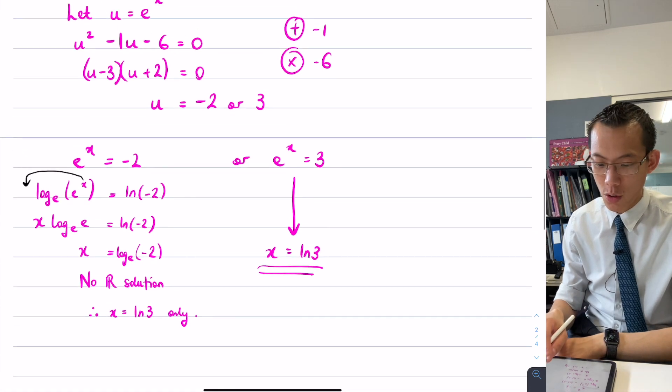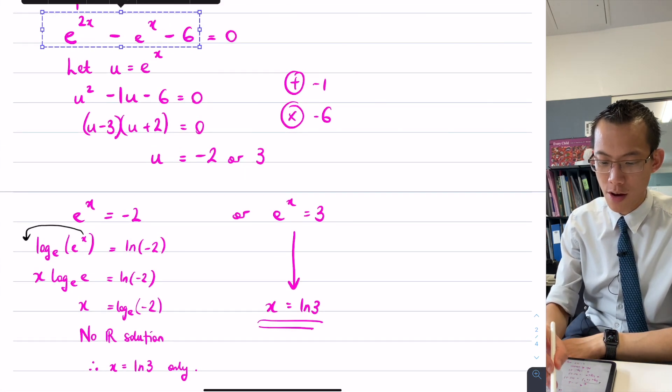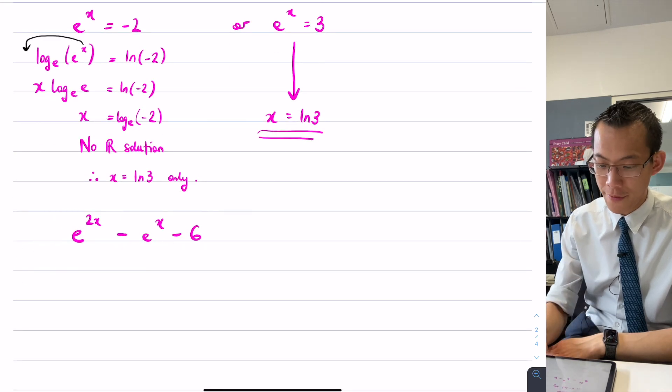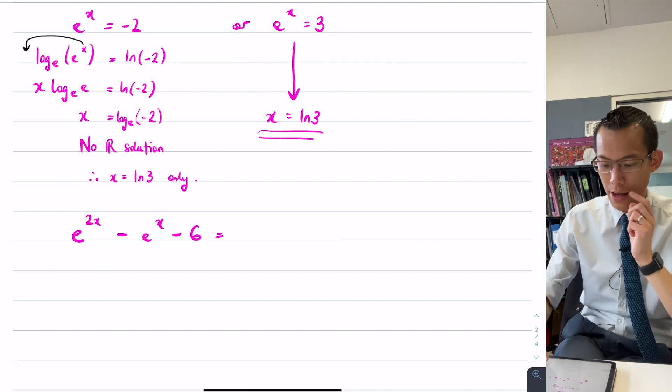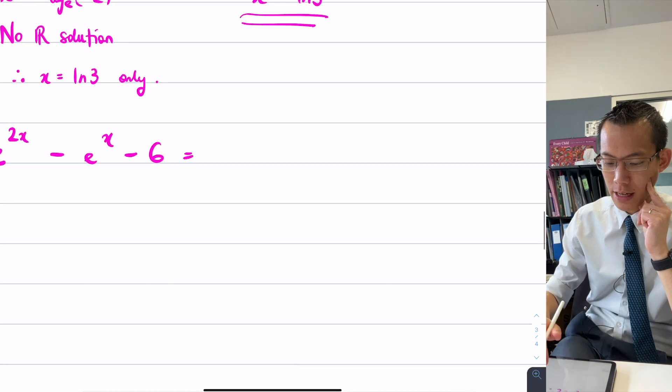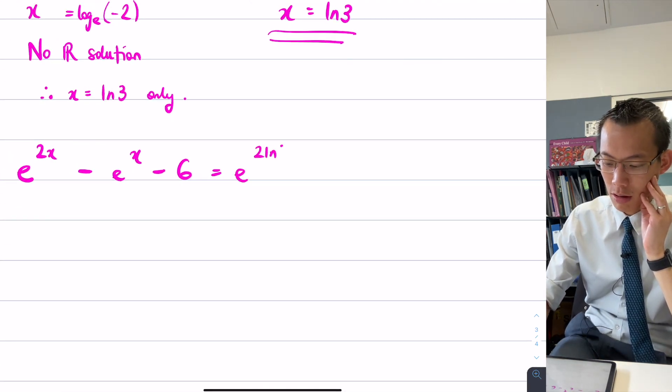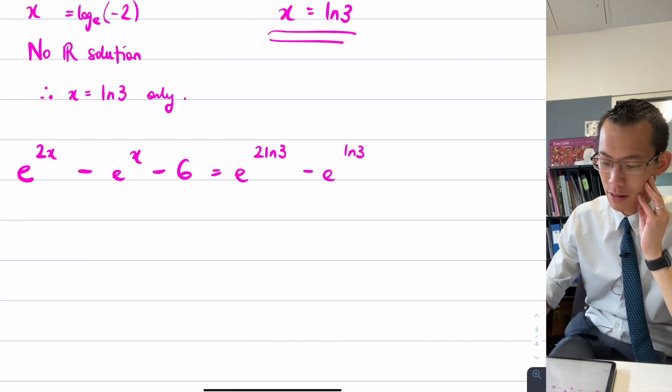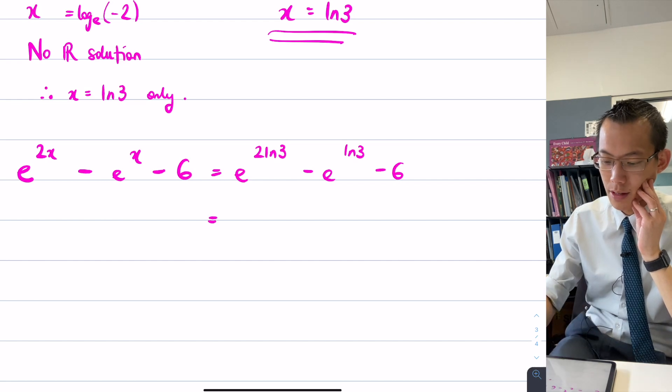And you can, well, here's the original function up here. And what I can do is, I'll just prove to you that it works. This is, I'm suggesting that x is log three. So I'm going to go e to the two log three, take away e to the log three, take away six. That's what I got. Which is e to the log nine.